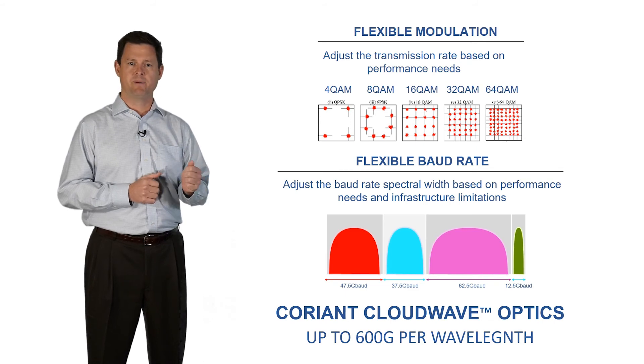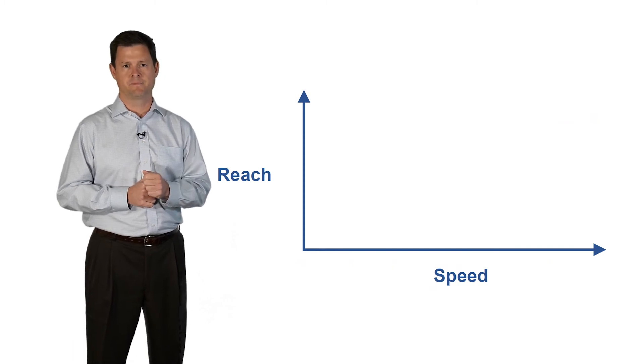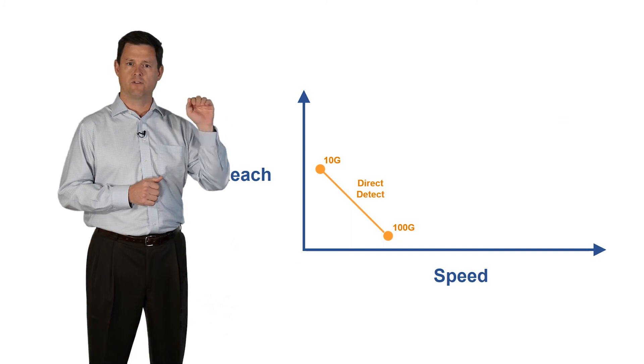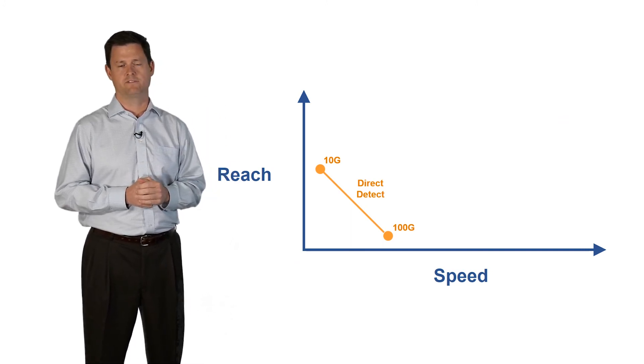An added benefit to all these advancements is the change in the relationship between reach and speed. With direct detect receivers, as you scale up the bandwidth, the reach goes down very quickly, making them not suitable for interoffice transmissions.